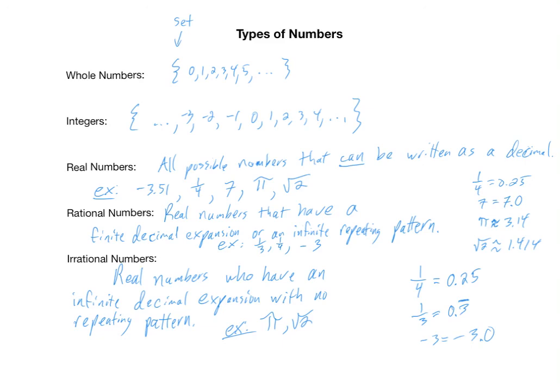These are the five types of numbers you're responsible for knowing: whole numbers, integers, real numbers, rational numbers, and irrational numbers. Let's now look at a Venn diagram to give us a sense of how these numbers relate to each other.